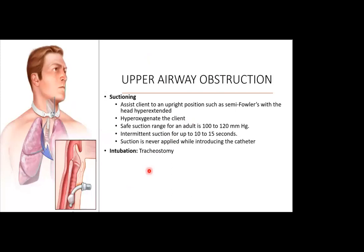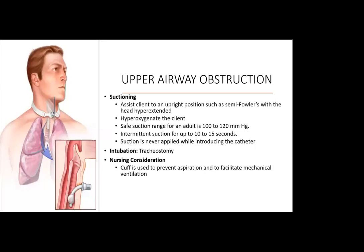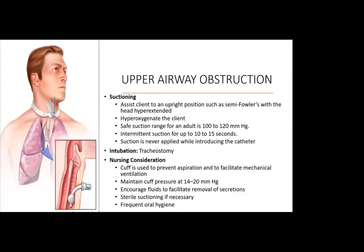Nursing considerations for a tracheostomy include maintaining cuff pressure at 14 to 20 mmHg, encouraging fluids to facilitate removal of secretions, and carrying out sterile suctioning when necessary. We also need frequent oral hygiene. We may need to place the client on mechanical ventilation — a form of assisted ventilation using a machine to fully or partially provide artificial ventilation.